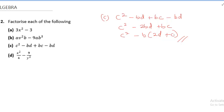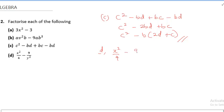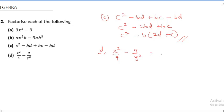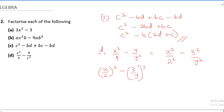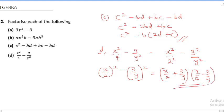The last factorization question is s²/4 − 9/y². Notice this looks like a difference of two squares. We rewrite it as (s/2)² − (3/y)². Applying the difference of two squares formula, this factorizes to (s/2 + 3/y)(s/2 − 3/y). Those are the factors of this expression.